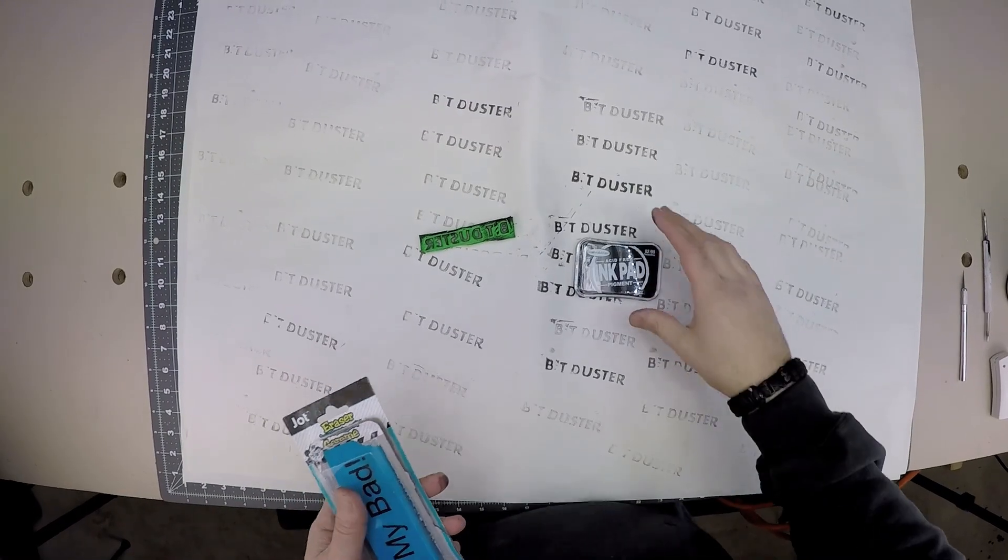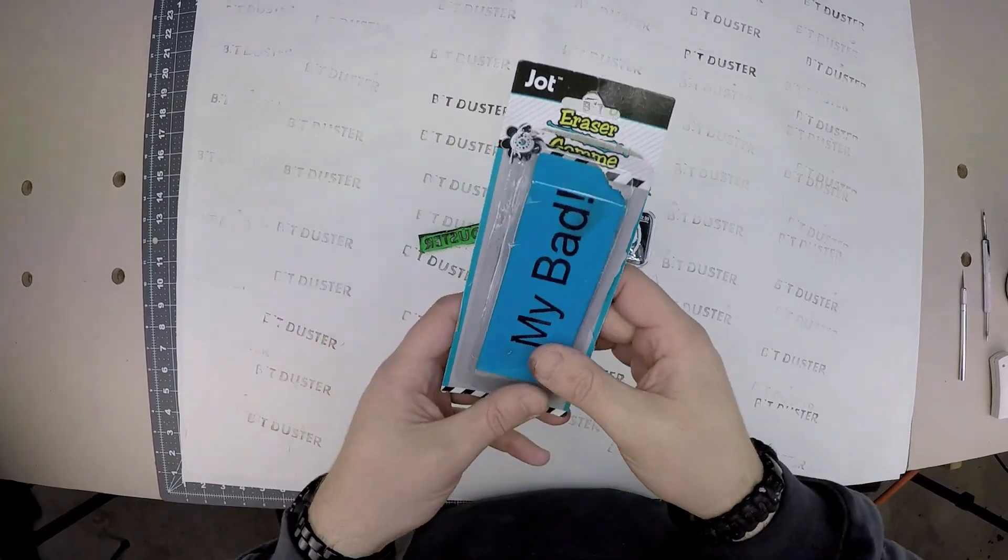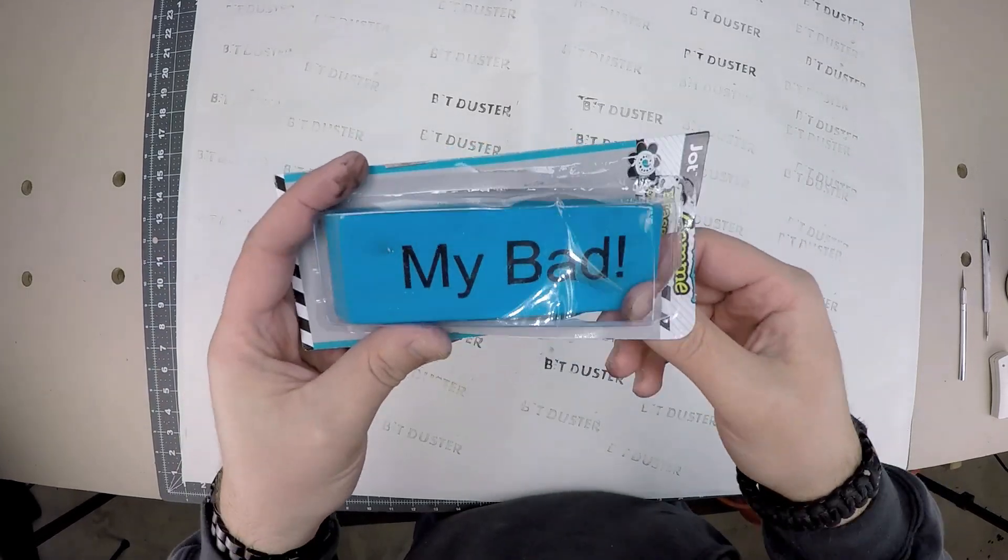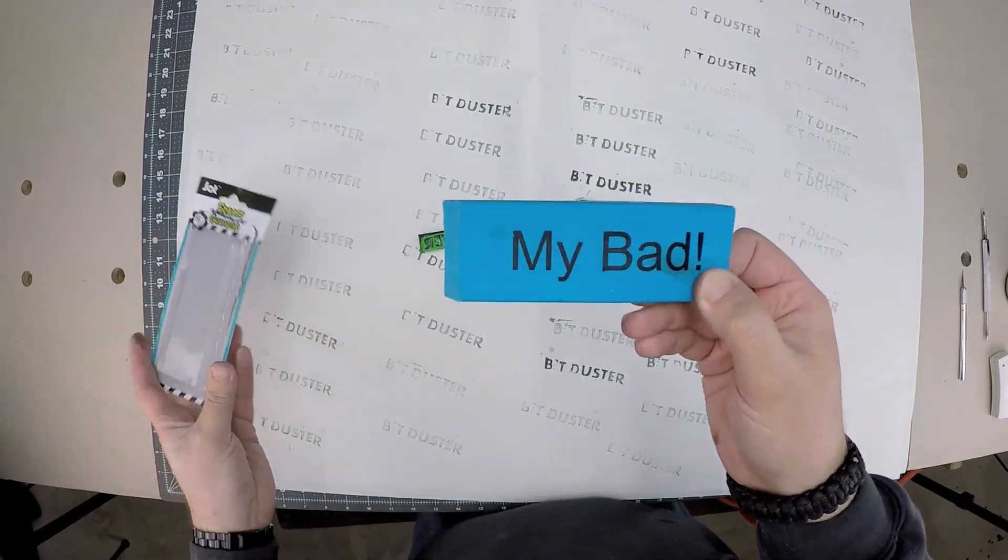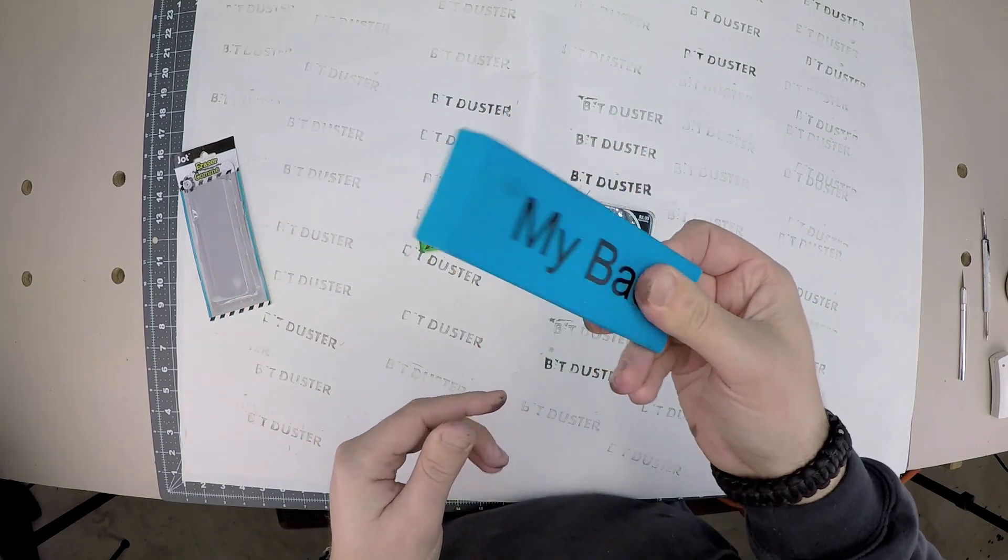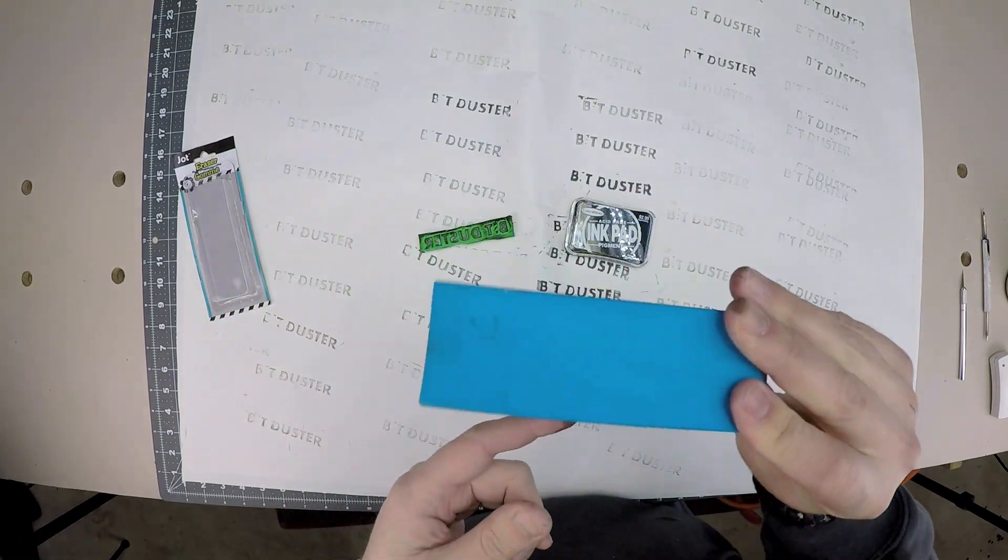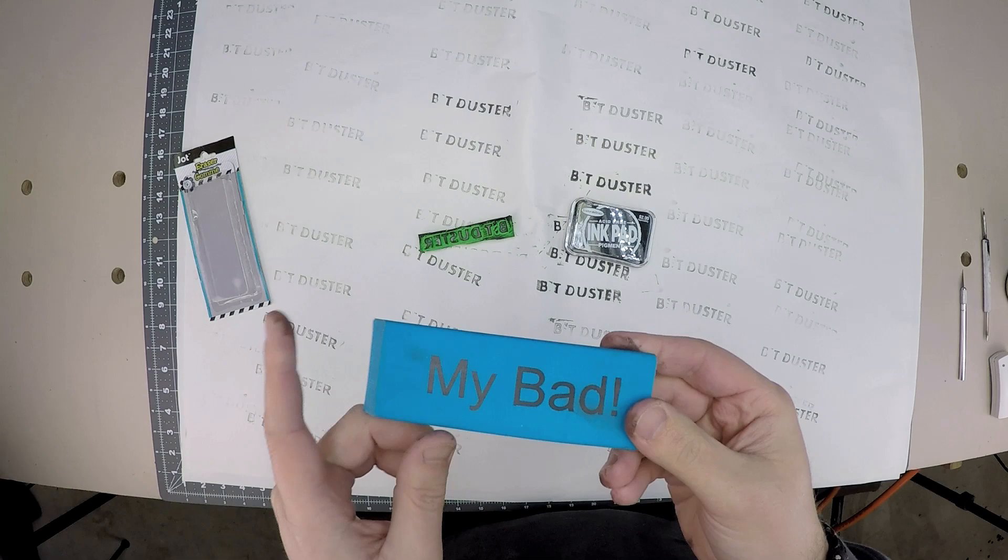So to make this cool project, we're going to need an eraser, and I got this one from Dollar Tree, where everything is one dollar. Just make sure it's rubber, and that's what erasers are usually made from.